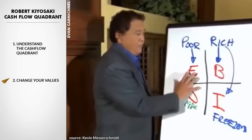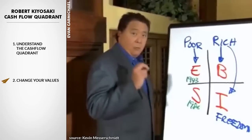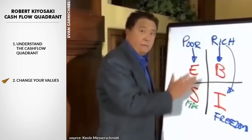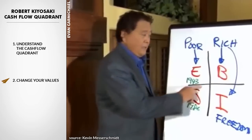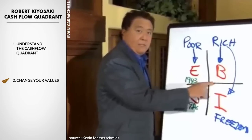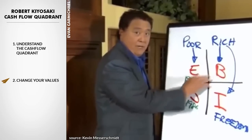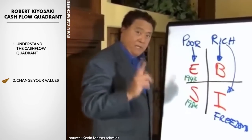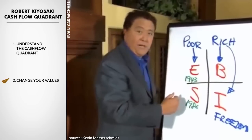For people who want to make the shift over to the B quadrant, one of the beauties of a network marketing company is that you can do that for a very low price. To build a Microsoft would take hundreds of millions of dollars, but a network marketing company allows you to start at a very low rate. They'll be patient with you and take the time to help you transition. That time is important because it takes time to change your values.